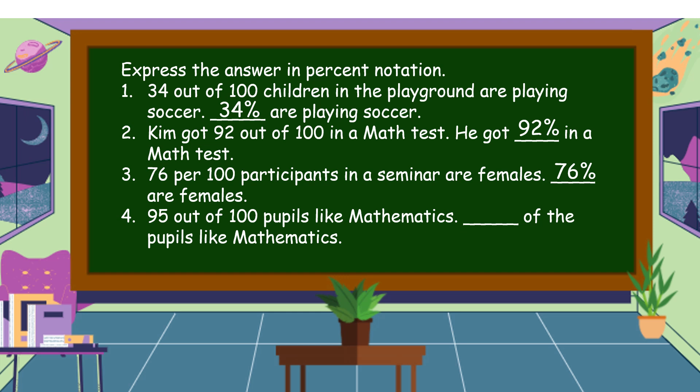Next one: 95 out of 100 pupils like mathematics. Blank of the pupils like mathematics. And the correct answer is 95 percent.